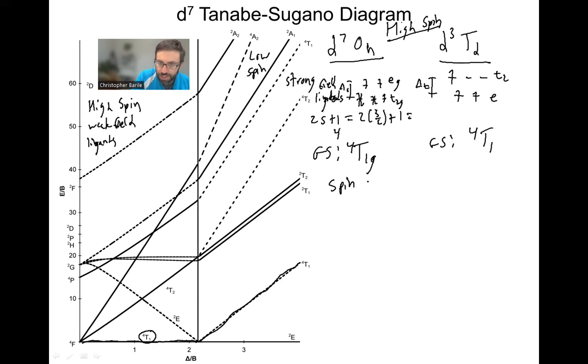Now spin allowed transitions. Those are going to be transitions that are high in intensity. So they're going to show up in our UV-vis spectrum. And they're going to be ones where we preserve the spin. So from going from the ground state to excited state, we're going to stay a quartet. So we have to look for other quartets in this diagram. And we see a quartet right here, quartet T2. So that's going to be our first excited state. So we can write down the transition. It's going to be for the octahedral case, going from quartet T1G. That's our ground state to our excited state, quartet T2G. And for our tetrahedral case, we just have the same thing, but we drop the Gs.